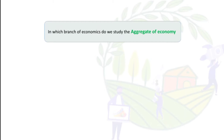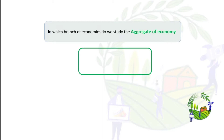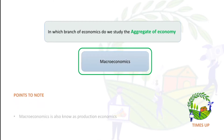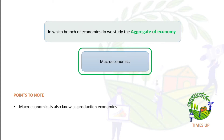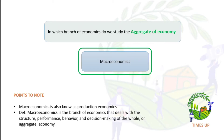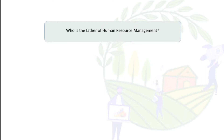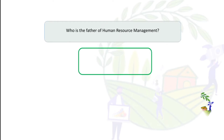In which branch of economics do we study the aggregate economy? The answer is macroeconomics. Macroeconomics is also known as production economics. Macroeconomics is a branch of economics that deals with the structure, area, and decision making of the whole or aggregate economy.